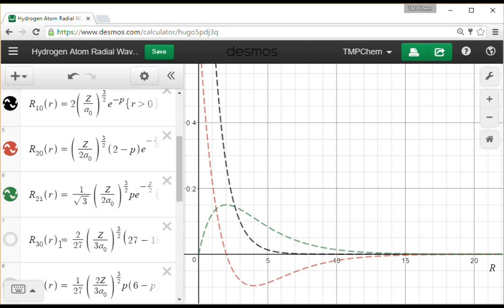R21 would be a 2p function: 2pz, 2px, 2py. That just goes up, reaches a maximum, and then slowly decays away down to 0.